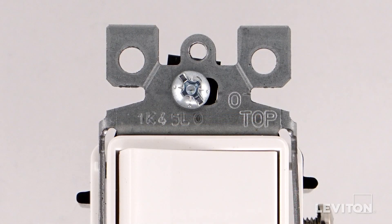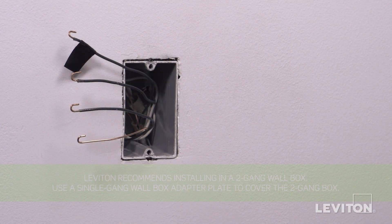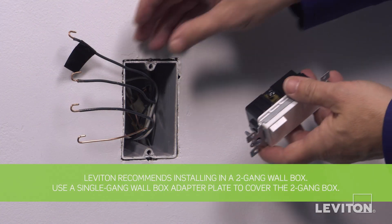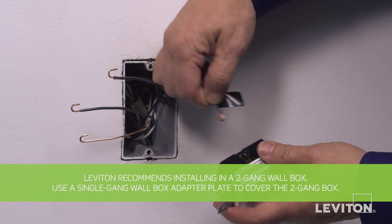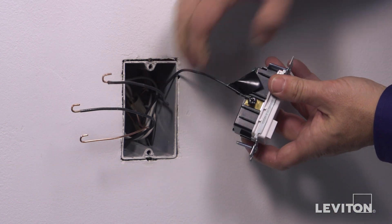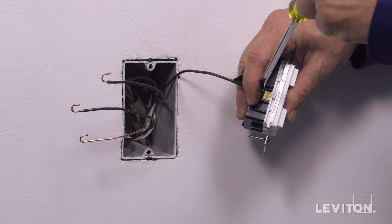Before wiring, be sure the word top on the strap is facing up. To wire, loop the hot wire clockwise three-quarters of a turn around the black terminal screw. Tighten firmly.